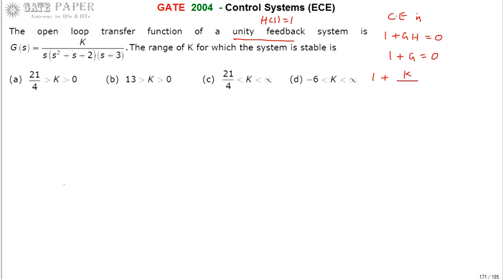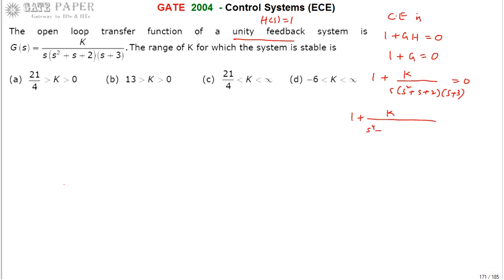So we write: 1 + K divided by [S(S² + S + 2)(S + 3)] = 0. After simplification, this becomes 1 + K divided by S⁴ + 4S³ + 5S² + 6S = 0.